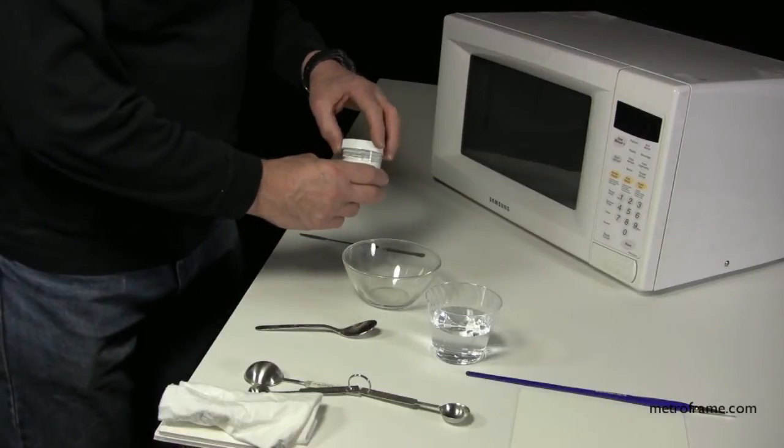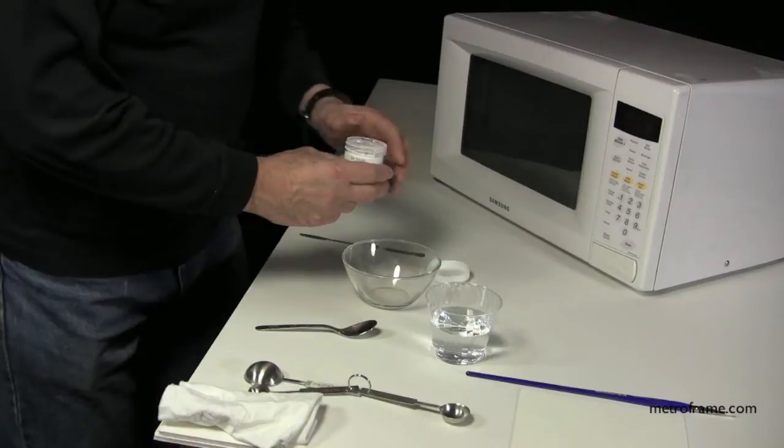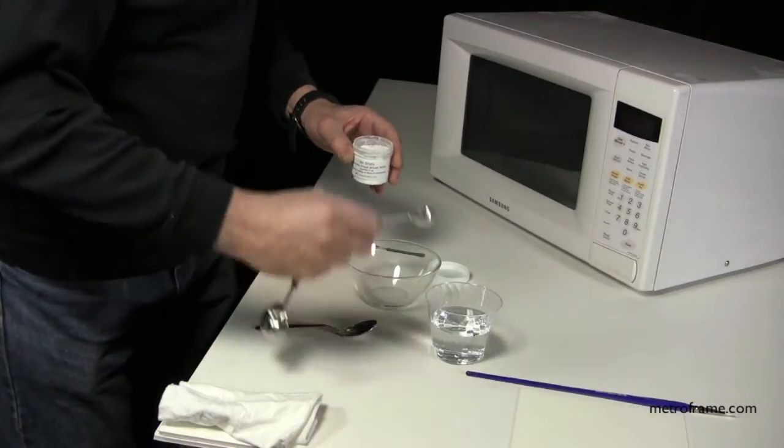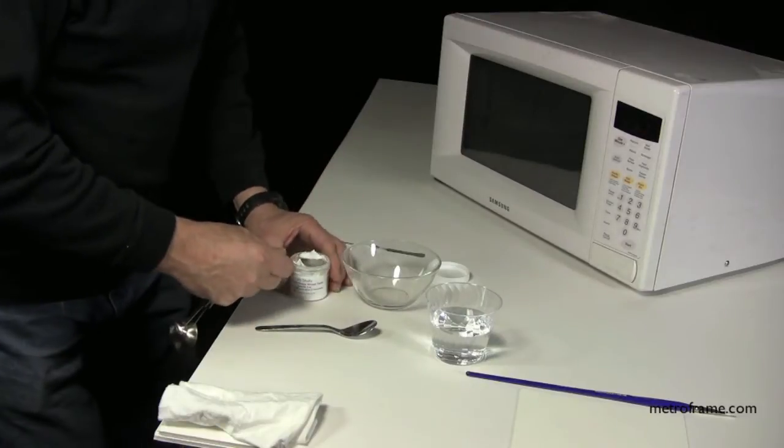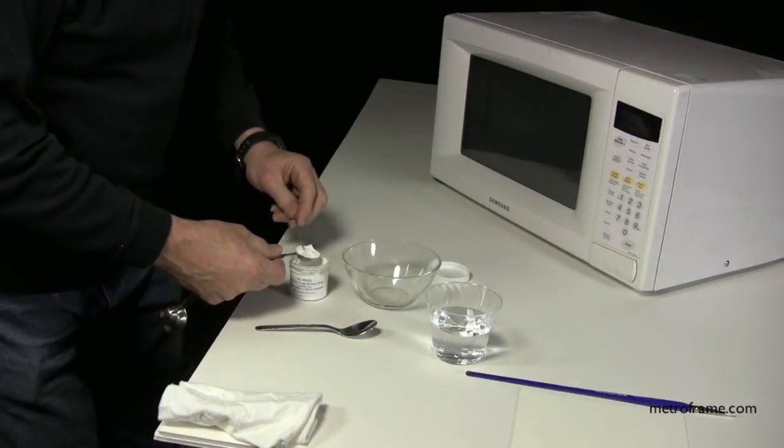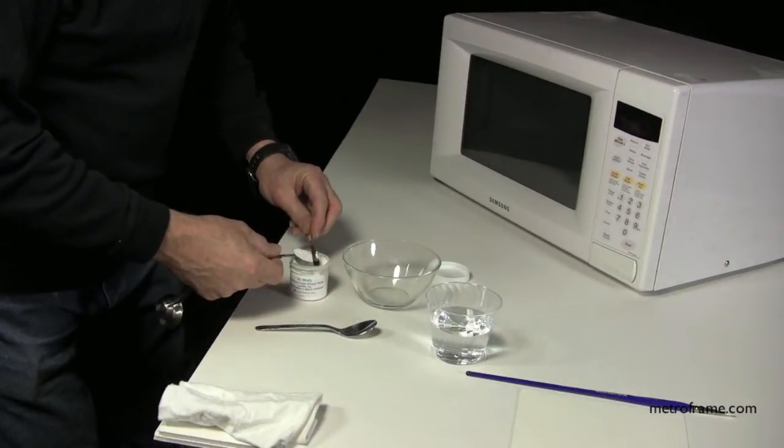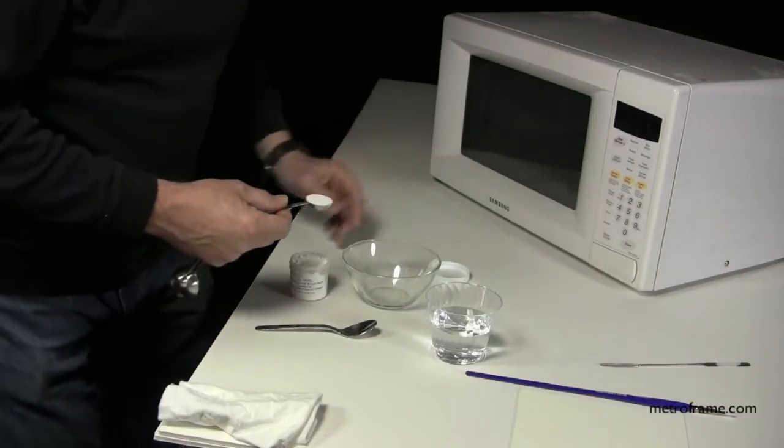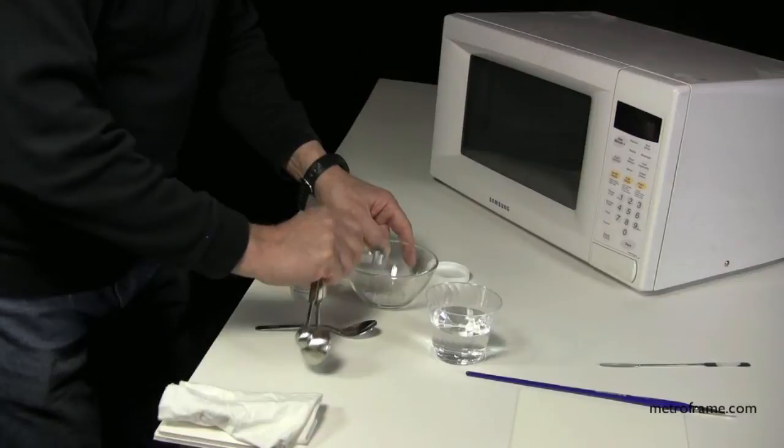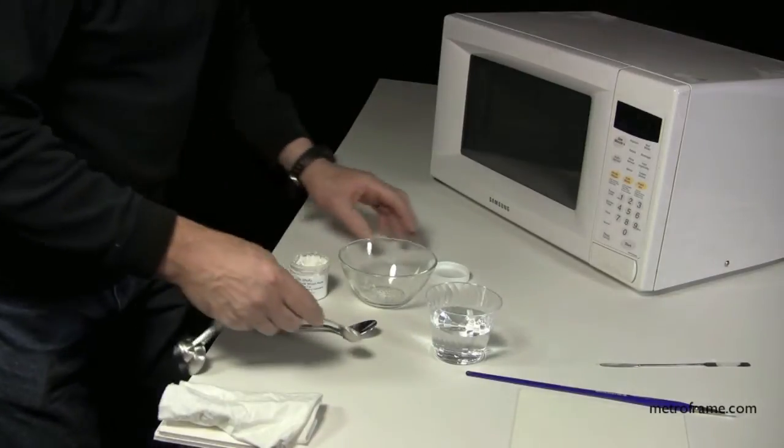The first thing we do is measure out the water and the paste. The ratio is four to one, so in this case we're going to use one tablespoon of paste and we're going to add four tablespoons of water.